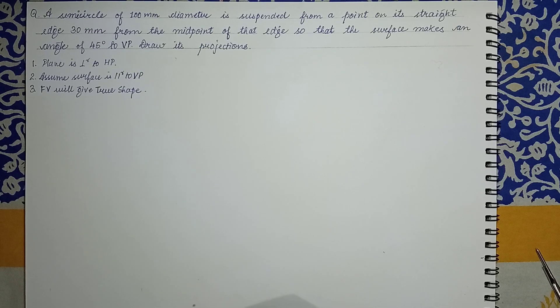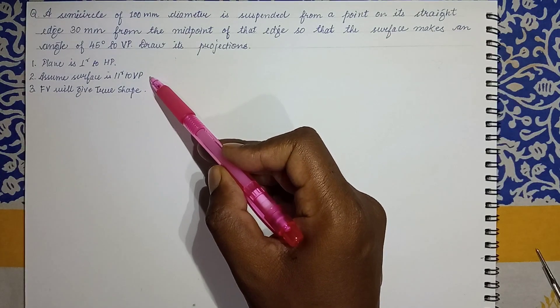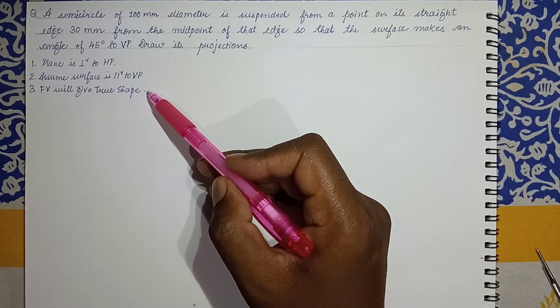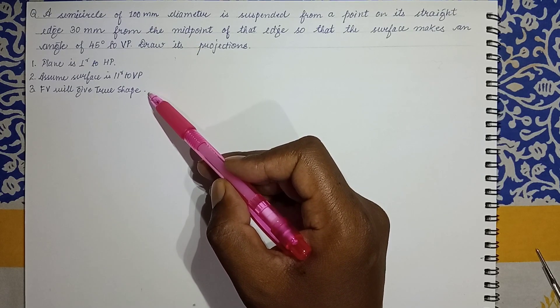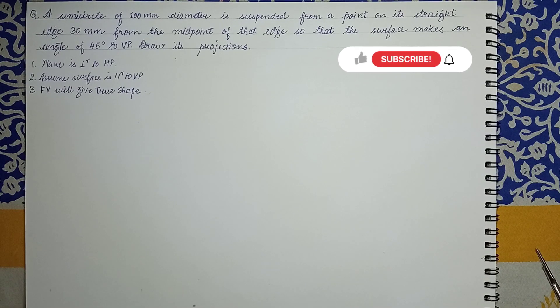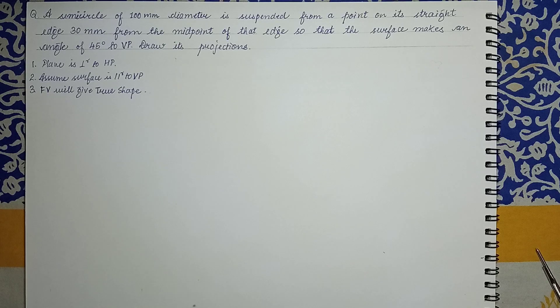The first is the plane is perpendicular to HP. Definitely when the plane is suspended it is perpendicular to HP and it will be assumed parallel to VP. Initially we assume that it is parallel to VP. As it is parallel to VP it is going to make true shape in the front view, therefore we'll start with the front view in that suspended condition. But to get the suspended condition we need to draw the initial figure at given descriptive conditions.